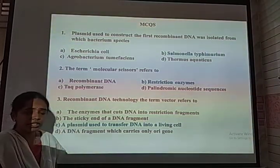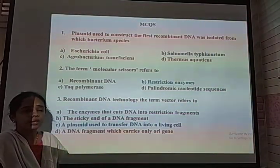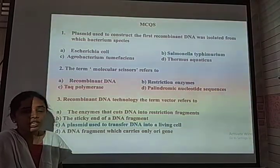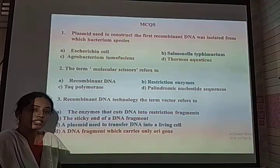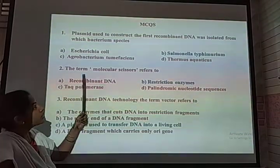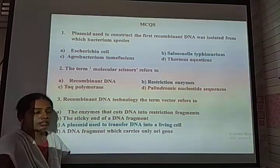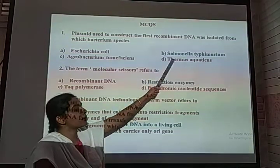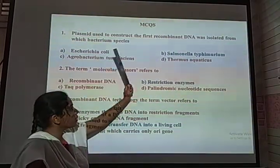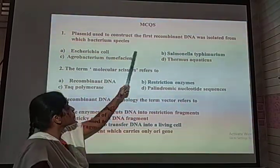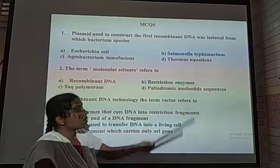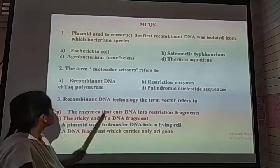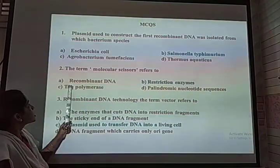In genetic engineering, E. coli is extensively used. But the first time recombinant DNA was isolated was from a microbe called Salmonella typhimurium. So the correct option for the first question is Salmonella typhimurium.